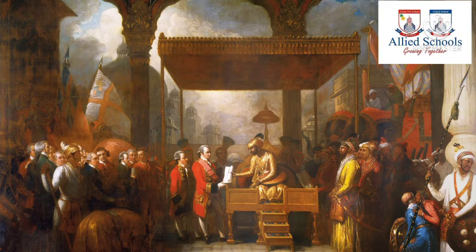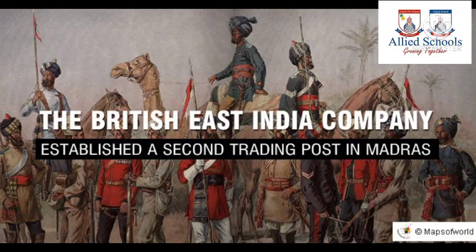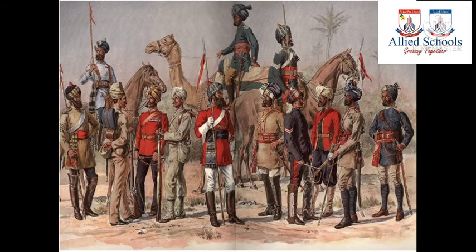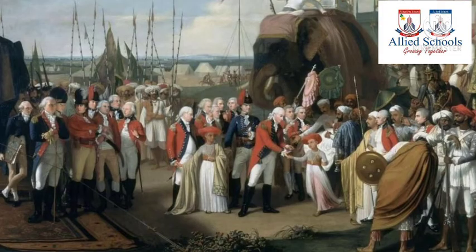The British government decided to take control away from the East India Company, and so they began to involve themselves in politics. From the mid-19th century, the British began to rule the whole of the subcontinent for 200 years.